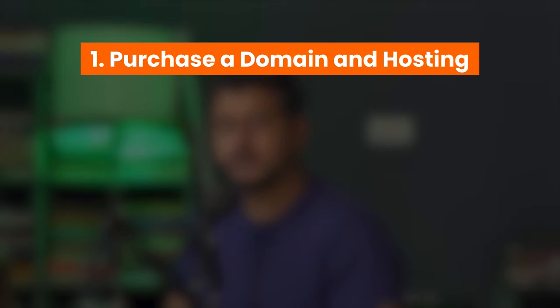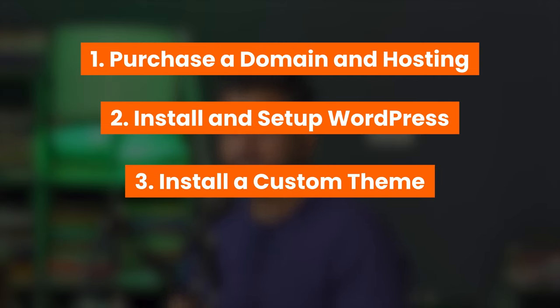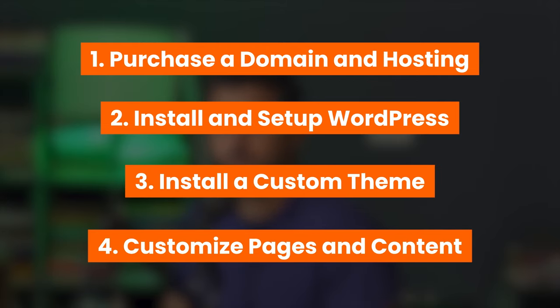And don't worry if you get stuck somewhere or have any questions — you can leave a comment and we answer every single comment about building websites. So we'll divide this process of building a website into a few different steps. The first step is getting a domain and hosting. Then we'll install and set up WordPress. Then we'll install a customized theme, customize pages, customize the appearance, upload our logos, and change the appearance of the website completely. And then we'll install a few plugins to add some much needed functionality. Everything is a step by step process, so you can pause the video and follow along.